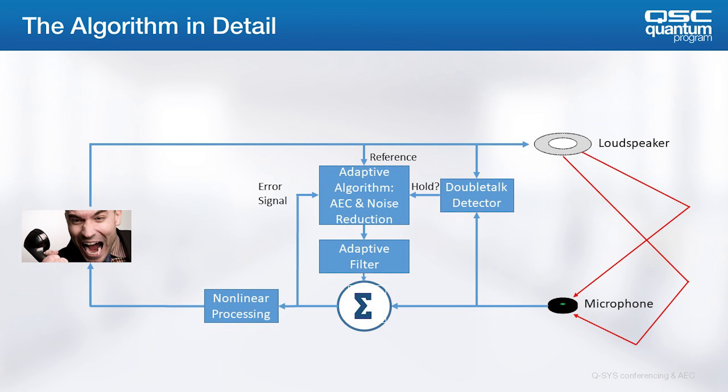Note, the algorithm uses a double-talk detector, to know if people at both ends of the call are talking at once. The adaptive filter holds in the double-talk condition, to make sure it doesn't attempt to remove any signal from local talkers that needs to reach the far end.